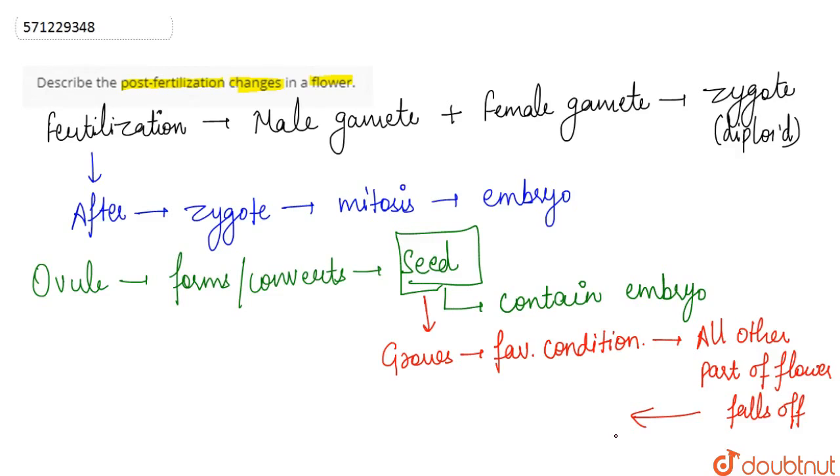So when all these parts of the flower fall off, they give space or lead to the growth of the ovary. So the ovary at this point starts to grow and develops into a fruit. Basically, we can say that ovule develops into seed and ovary develops into fruit. And when the ovary grows into a fruit, it develops a thick layer around itself that is known as the pericarp.